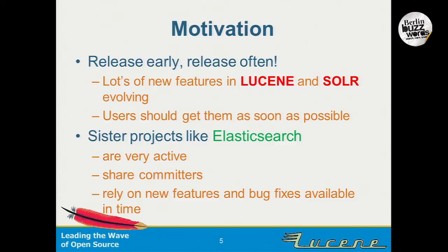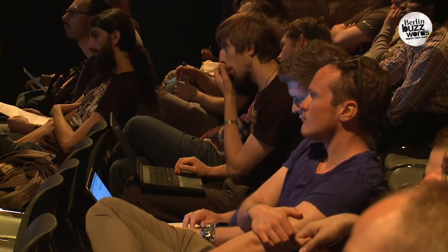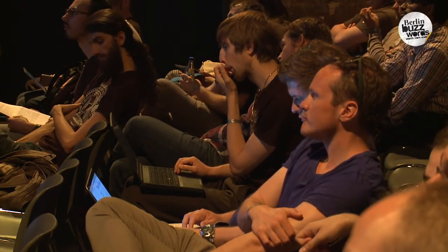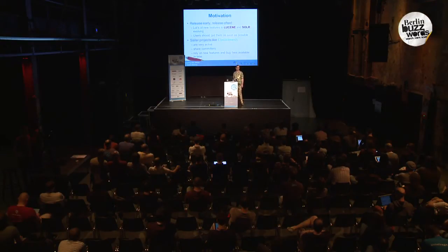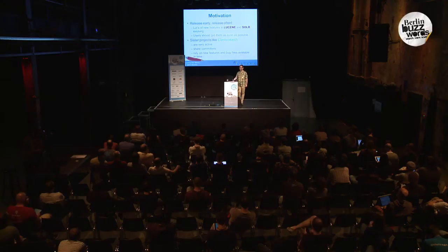Because of sister projects — in the early days Solr was also a sister project, but now we have Elasticsearch as a completely separate project — those projects are very active, especially Elasticsearch, and they also share a lot of committers. A lot of Lucene committers are involved in Elasticsearch and vice versa. Because of that we get a lot of new features and improvements in Lucene that need to be included in a new release. I think 4.0 was released at the end of 2012, and now we're already at 4.8 — something like 10, 11, or 12 releases — so you can see we are releasing more often now.